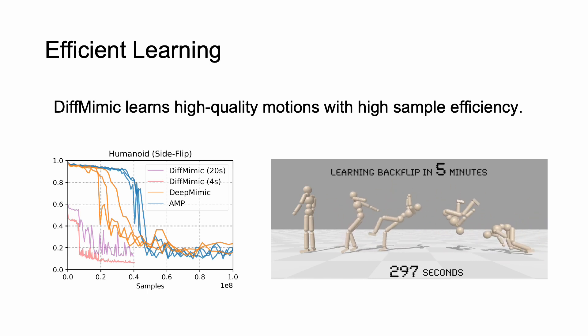DiffMimic learns high-quality motions efficiently. Compared to previous RL-based approaches, our method achieves around 10 times better sample efficiency and learns to mimic dynamic skills in minutes.